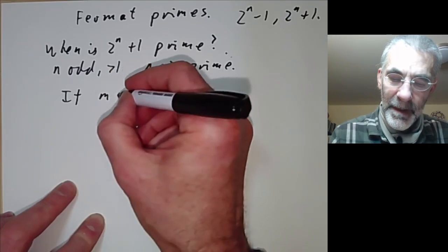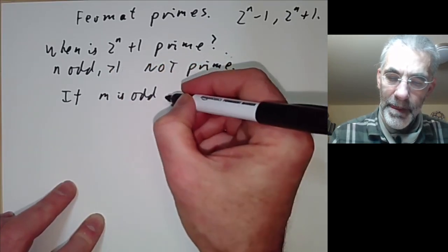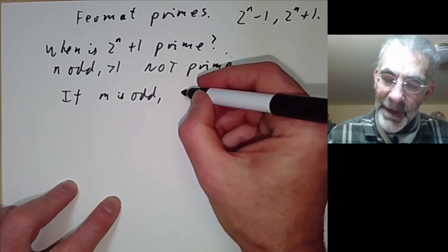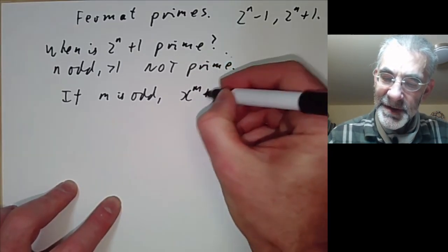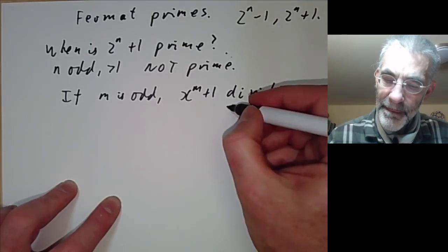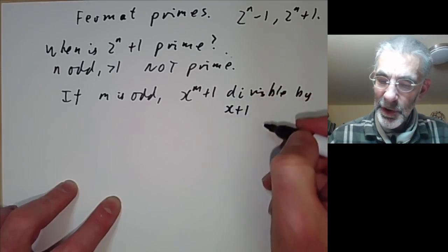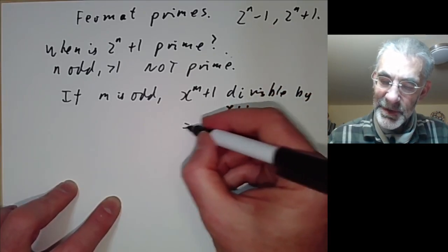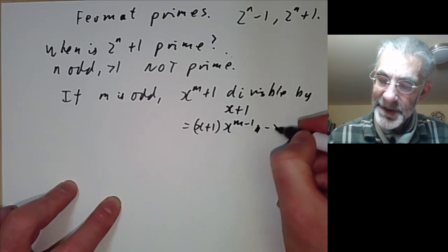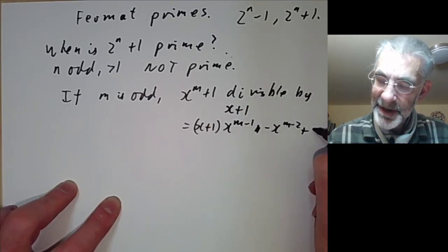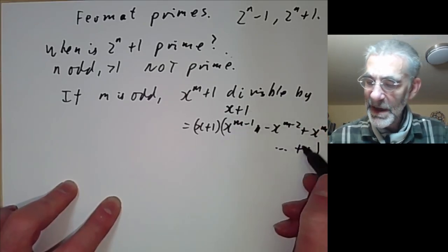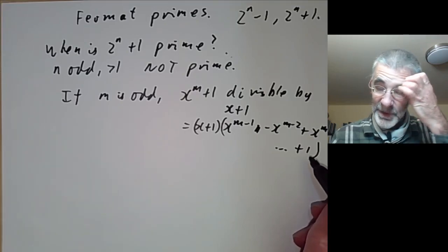The reason is: if m is odd, then x to the m plus 1 is divisible by x+1, because it equals (x+1)(x to the m-1 minus x to the m-2 plus x to the m-3 minus ... plus 1). This wouldn't work if m were even.